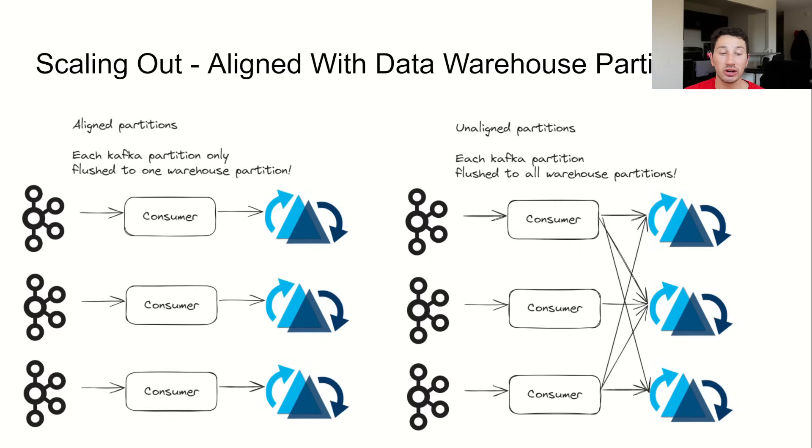For this reason, we actually want to partition our Kafka topic in an identical way to how we partition our data warehouse. Whether it's hash-based, range-based, on ad ID, campaign ID, or advertiser ID, all data from one Kafka partition should go into a corresponding partition in the data warehouse.